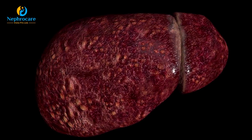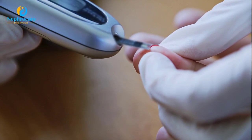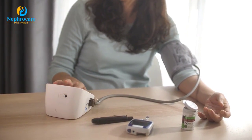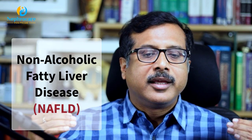Standard liver function tests may appear absolutely normal even when there is underlying liver damage — for example, from hepatotoxic drugs. This is especially important in patients with chronic metabolic diseases like diabetes, long-standing hypertension, and chronic kidney disease, which are closely linked to non-alcoholic fatty liver disease.